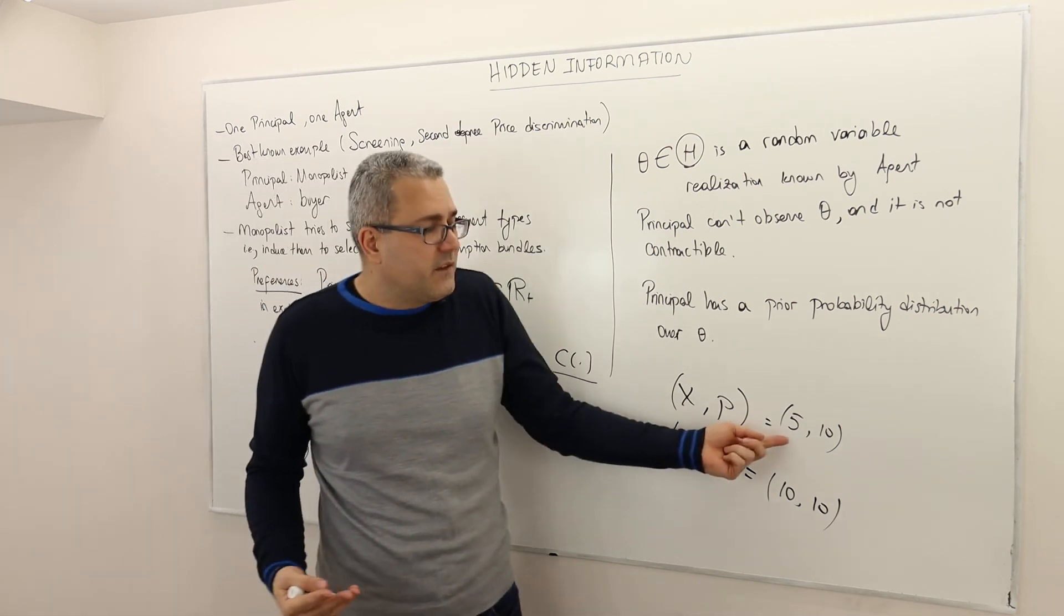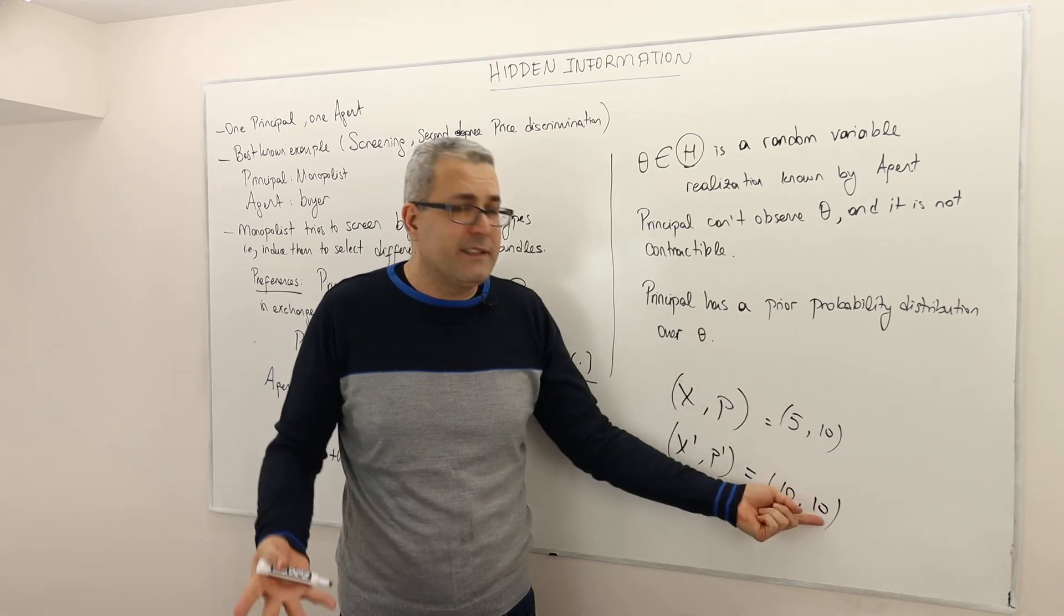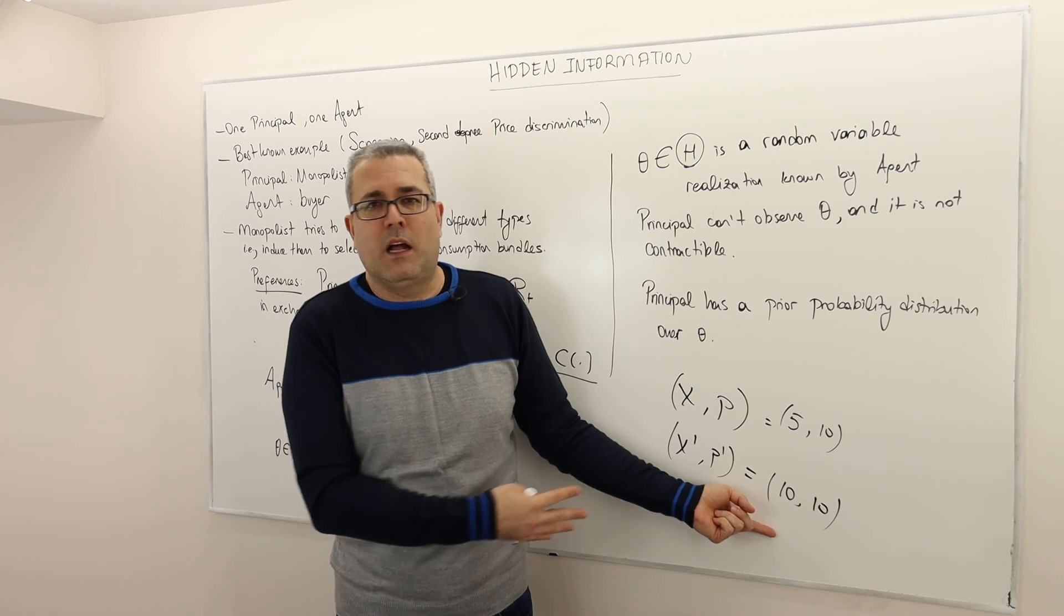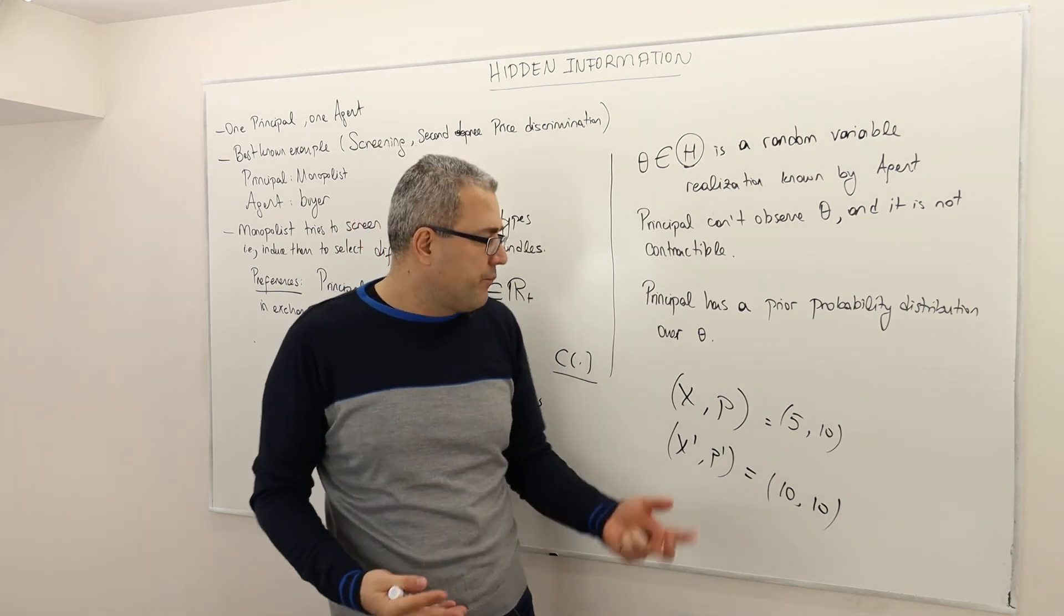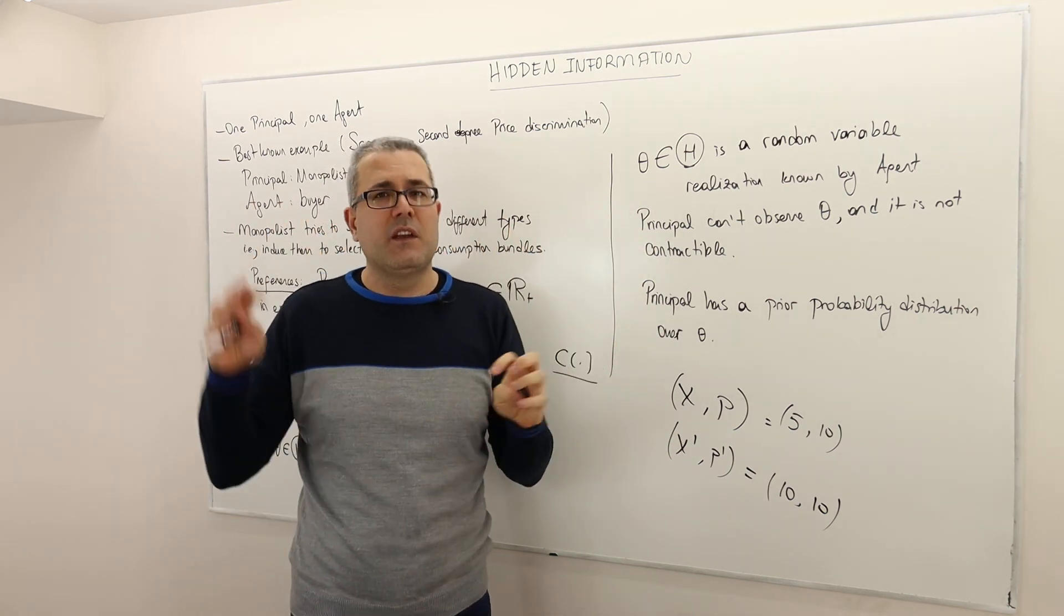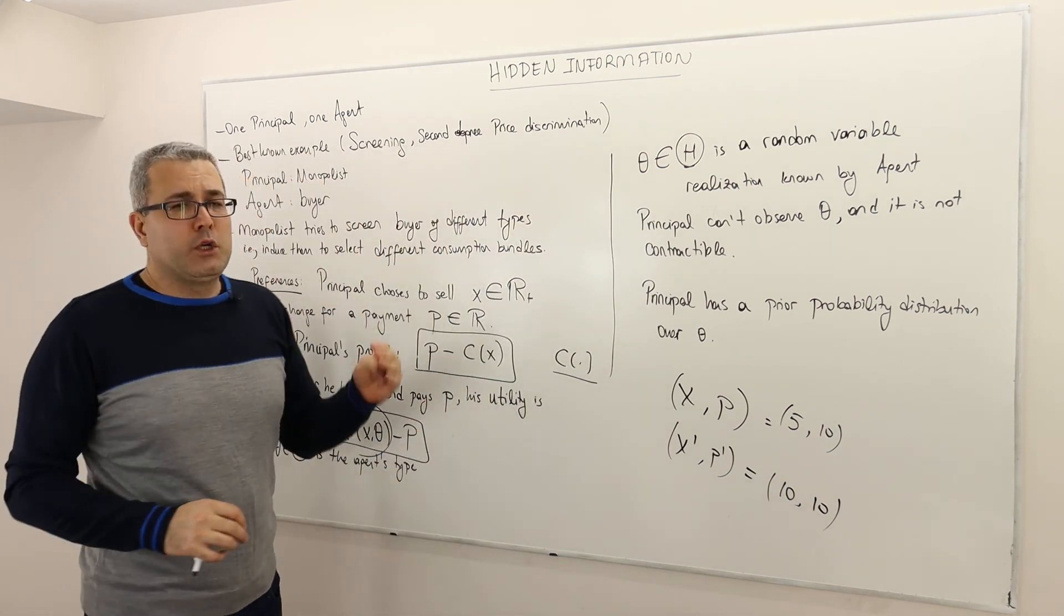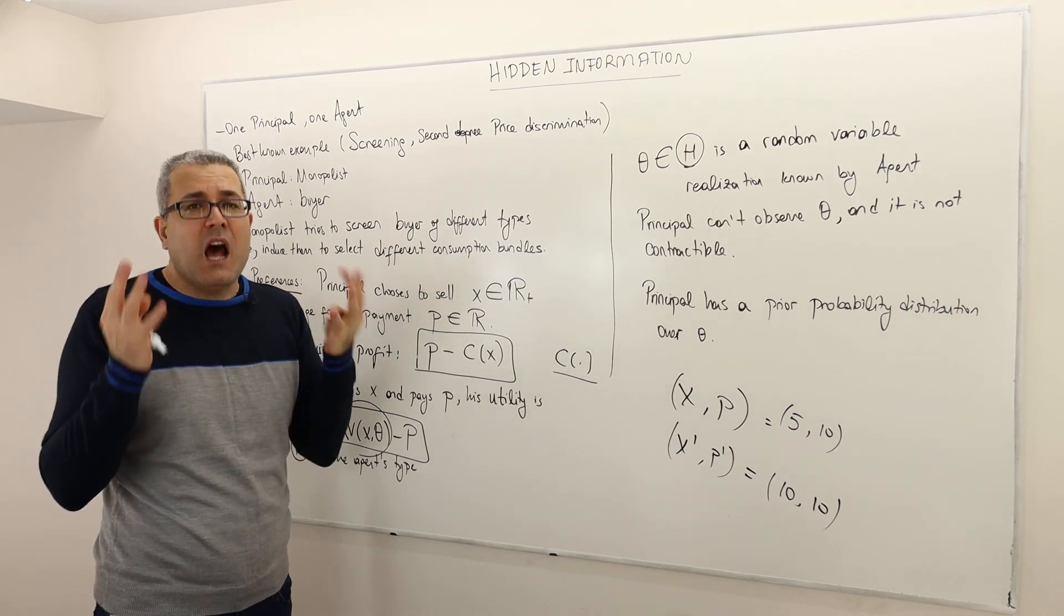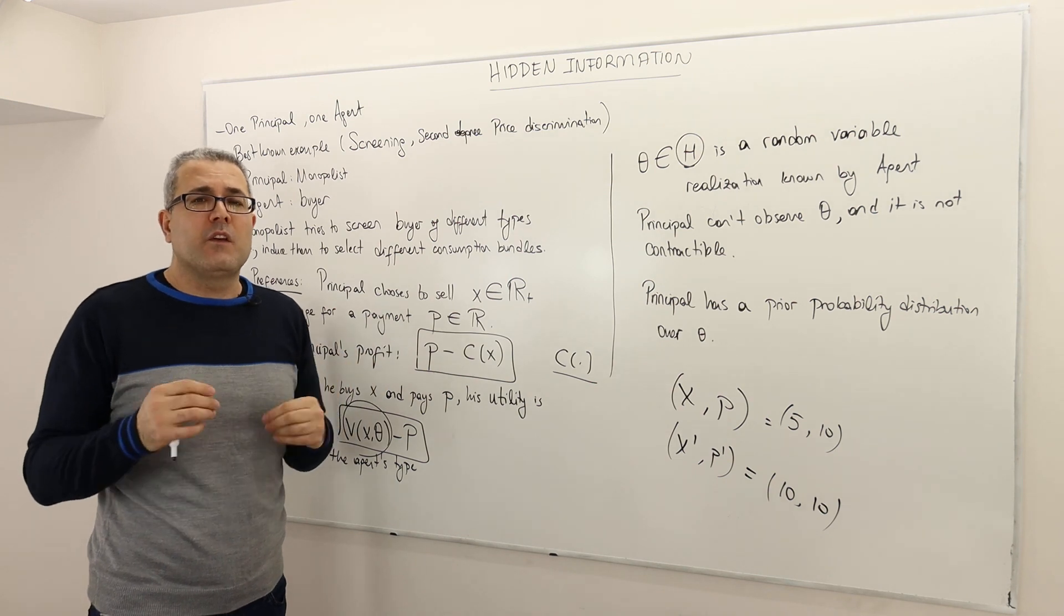So therefore, instead of paying $10 for 5 gigabytes, I'm going to pay the same money for 10 gigabytes. So you know what? I'll buy this one, although I may not need 10 gigabyte internet. So if you offer different packages, that means different X's and different P's. So the question is, what should the monopolist do? How many packages should it offer? And what should be the content of this package? What is the X? What is the P?